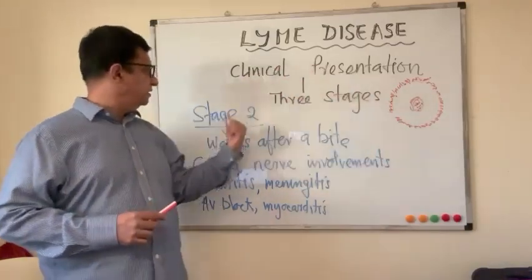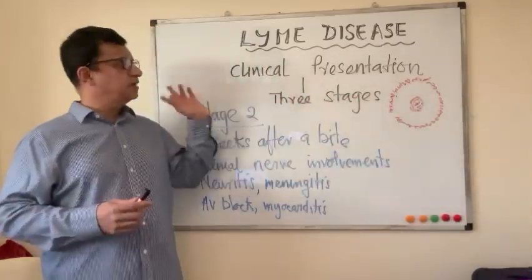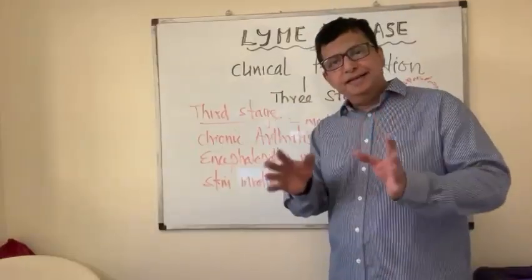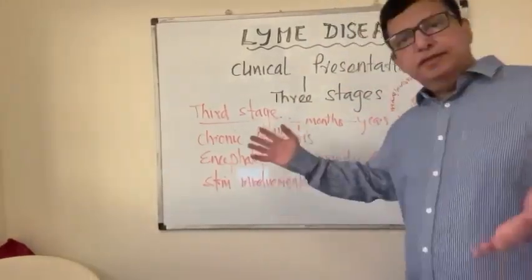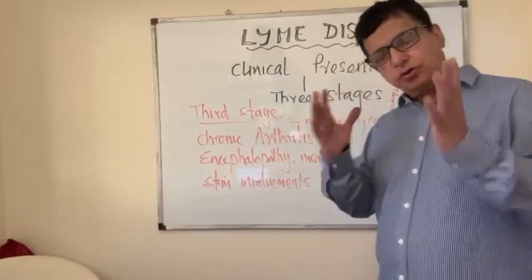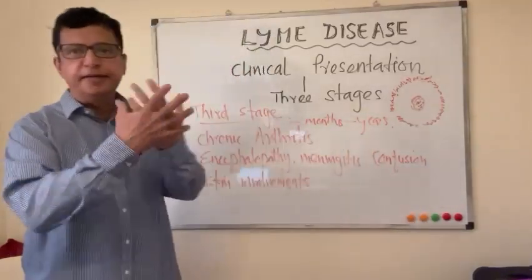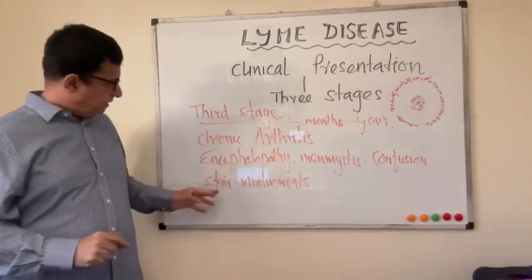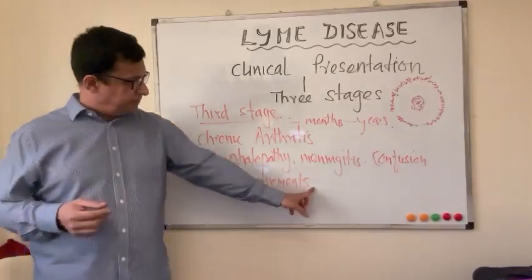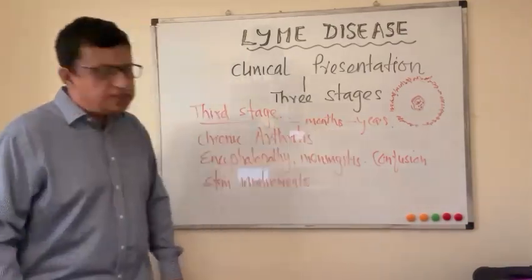Not all tick bites progress to the second stage — some are asymptomatic and some only present with the first stage. The third stage of the disease is really complicated. The commonest involvement is chronic arthritis — it could be oligoarthritis or monoarthritis — and it can also cause encephalopathy, meningitis, a confusion-like picture, neuritis, and skin conditions seen particularly in the European species of Lyme disease.